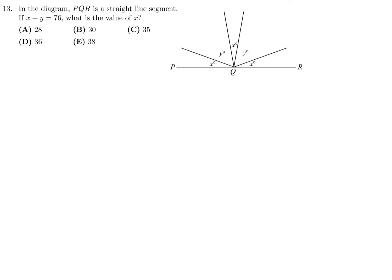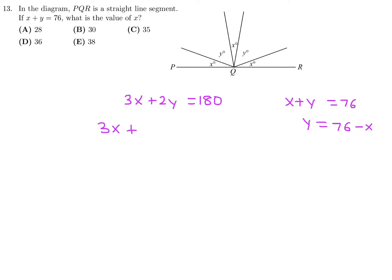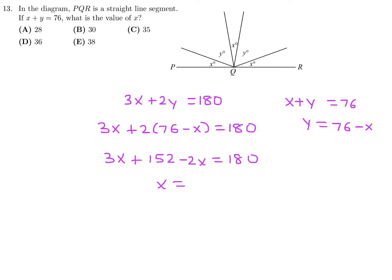In the diagram, PQR is a straight line, x plus y equals 76. All the angles add up to 180 because they are angles about a straight line, so that gives 3x plus 2y equals 180. Using x plus y equals 76, we isolate y as 76 minus x, then substitute: 3x plus 2(76 minus x) equals 180, giving 3x plus 152 minus 2x equals 180, so x equals 28. Number 13, the answer is A.